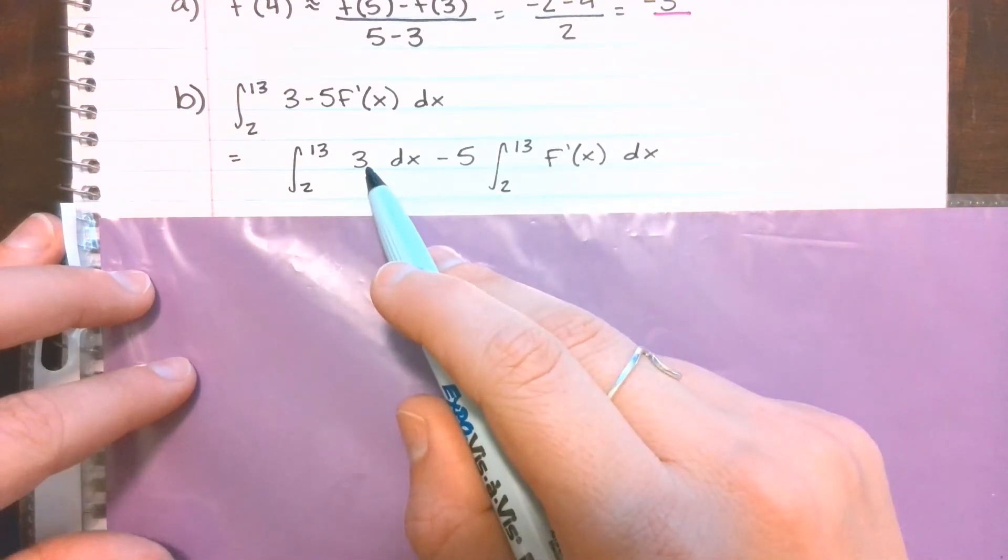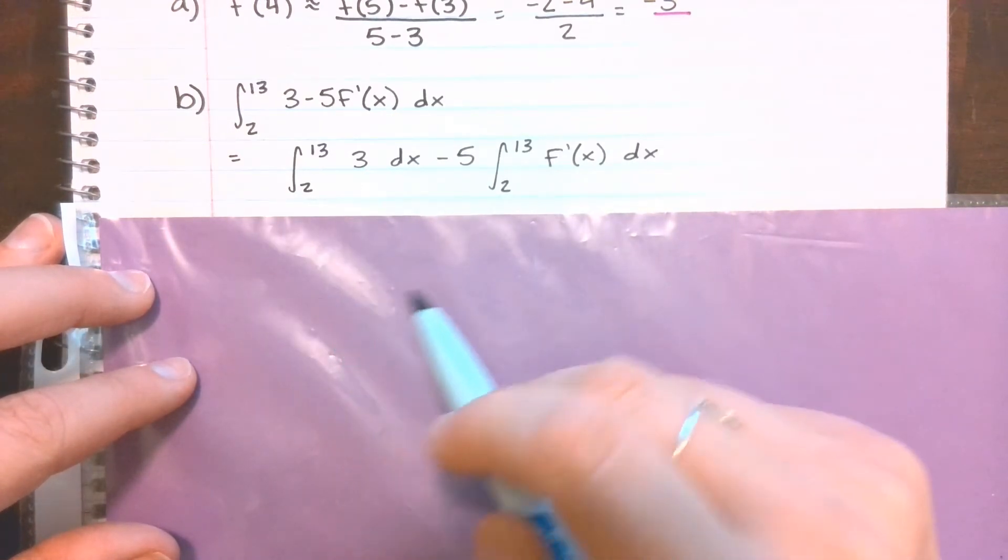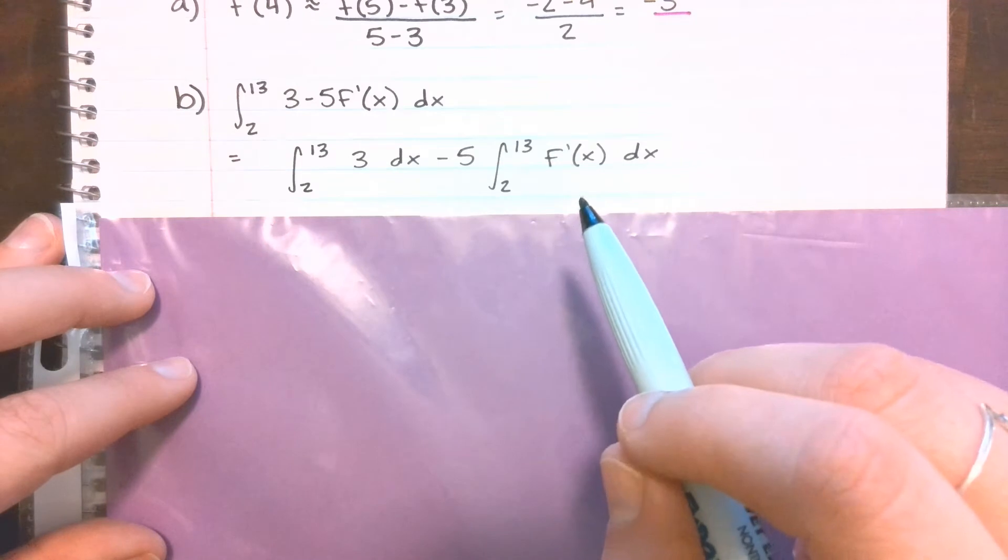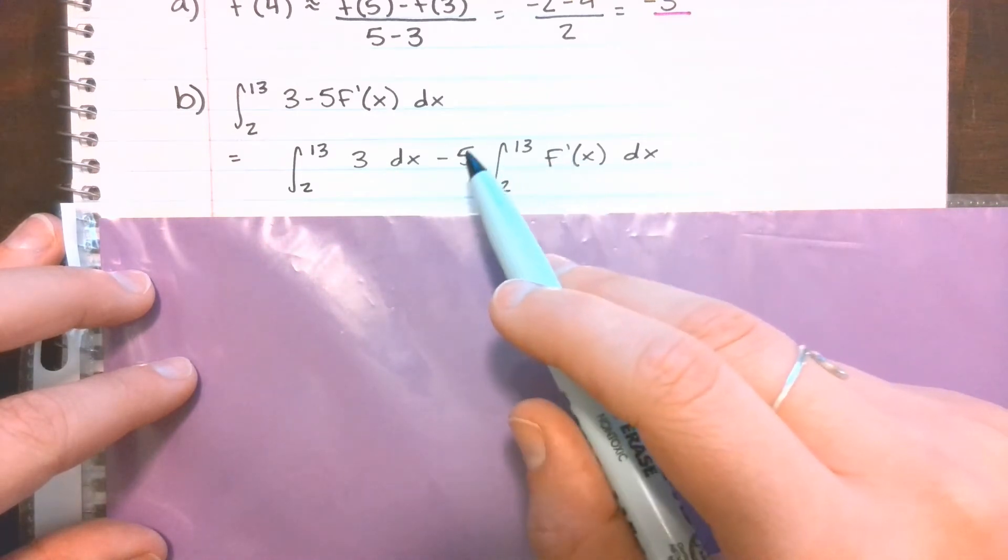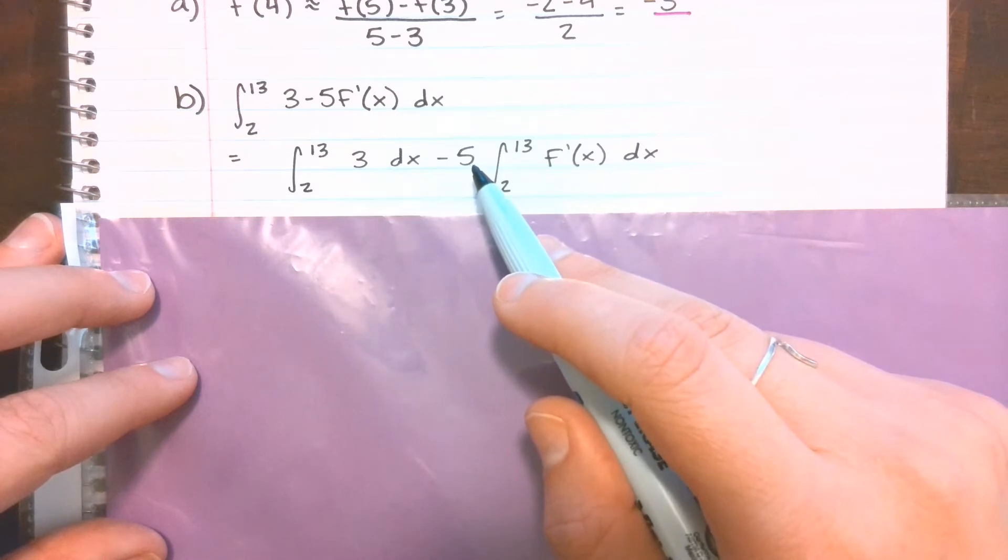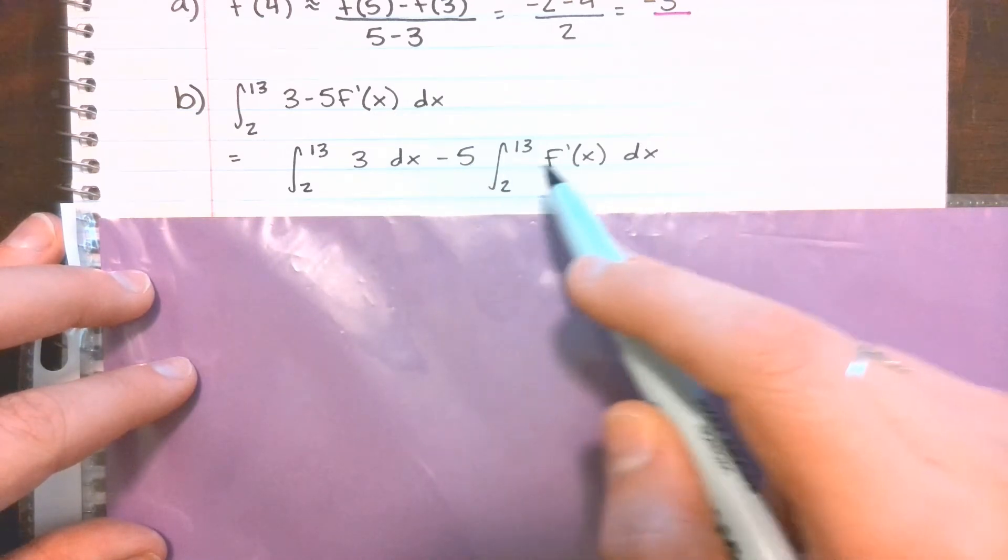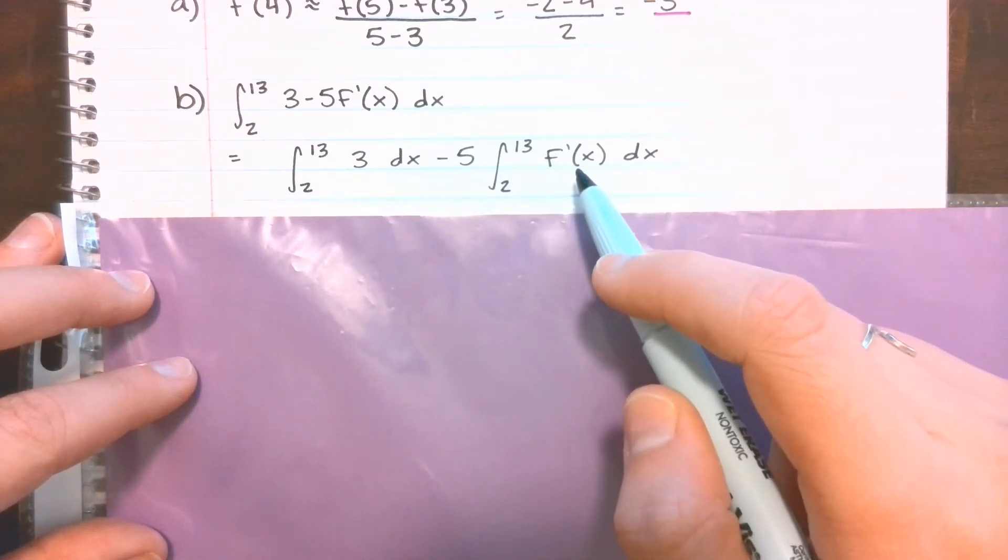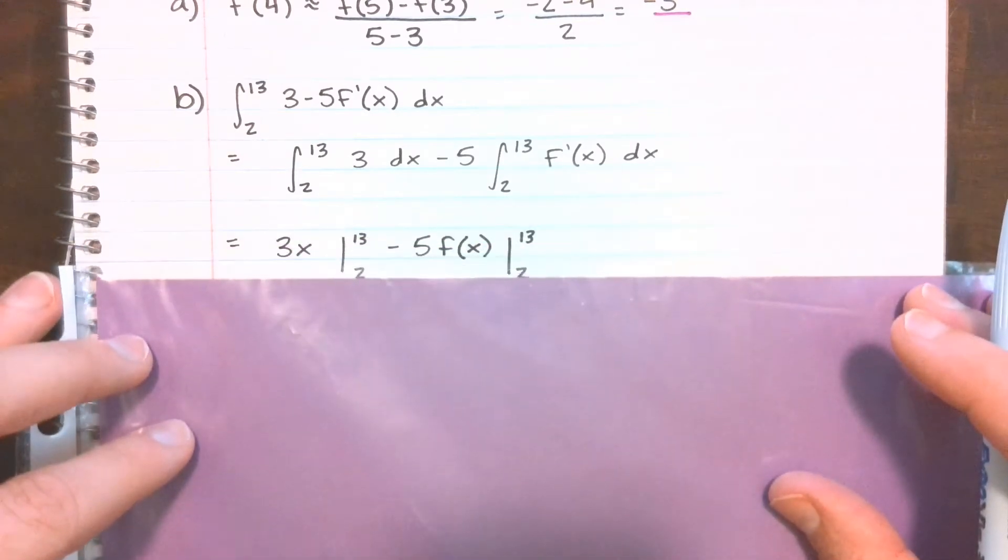I think that'll be a little bit easier to see. So when we're integrating just three, we're going to get three x, and then I'll have to find the definite integral here in a minute. With this negative five f prime, I'm going to put the negative five outside because it's just a coefficient, and then taking the integral of f prime should just give me f of x.